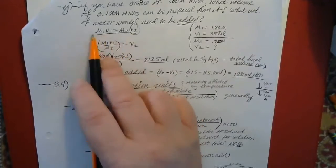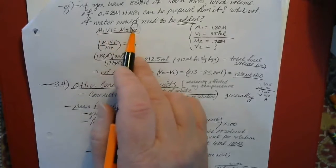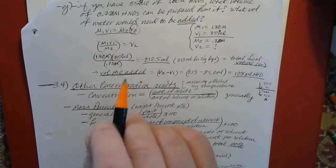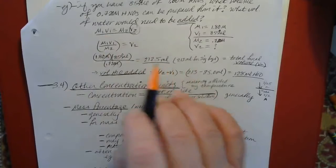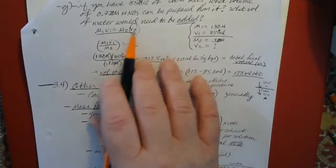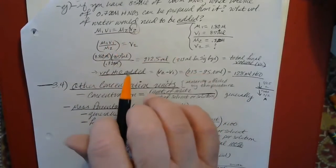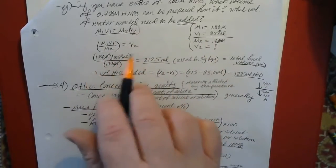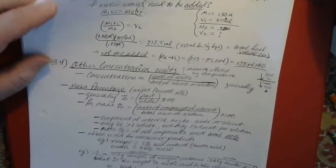Anyone studying chemistry should definitely know how to use this equation. We use the formula M1V1 = M2V2. The concentration doesn't necessarily have to be in units of molarity — the equation works for most units of concentration. Also, the volume does not necessarily have to be in liters; it can be in any volume units you want, as long as V1 and V2 are in the same units. So you could use milliliters, and if you're looking for V2, it will come out in milliliters.